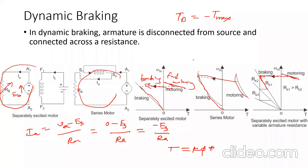We know that T = K·phi·Ia. Using that equation, the braking torque Tb equals minus K·phi·Ia — the minus sign comes because of the reversed direction of armature current. To maintain maximum braking torque, which depends on the value of Ia, and since Ia depends on Eb which depends on speed via Eb = K·phi·omega_m, as speed decreases Eb decreases and so Ia decreases. Therefore to maintain maximum braking torque, the braking resistance must be reduced progressively.